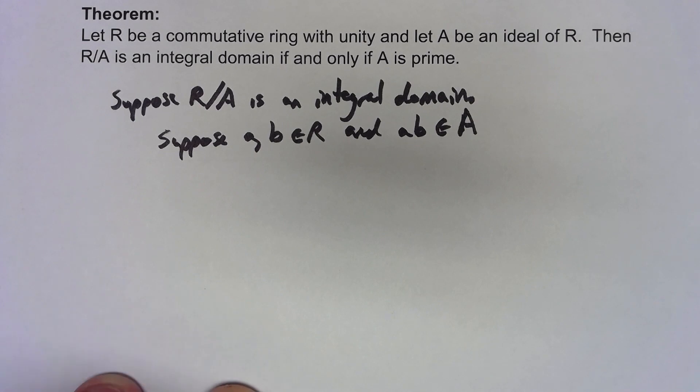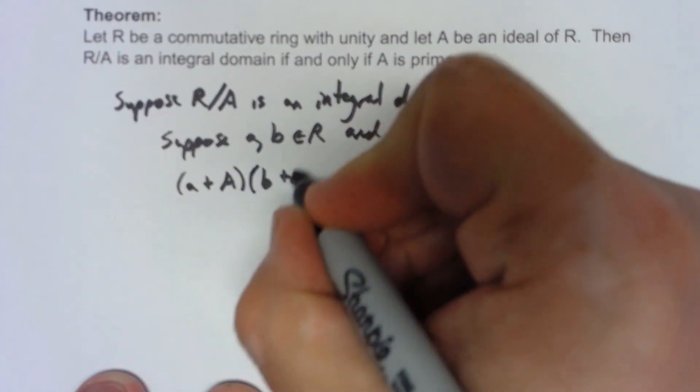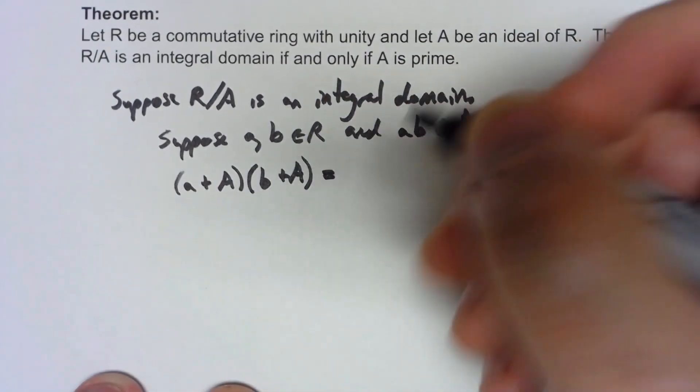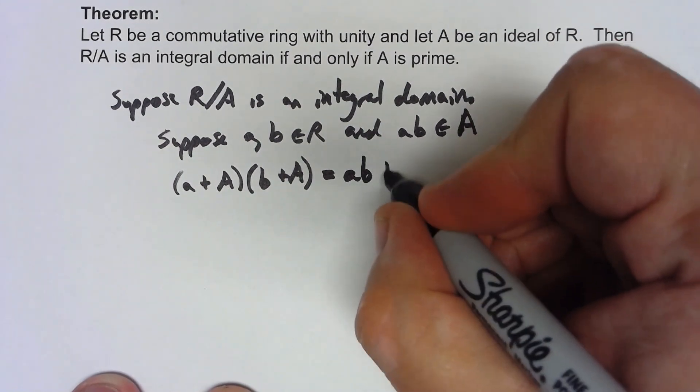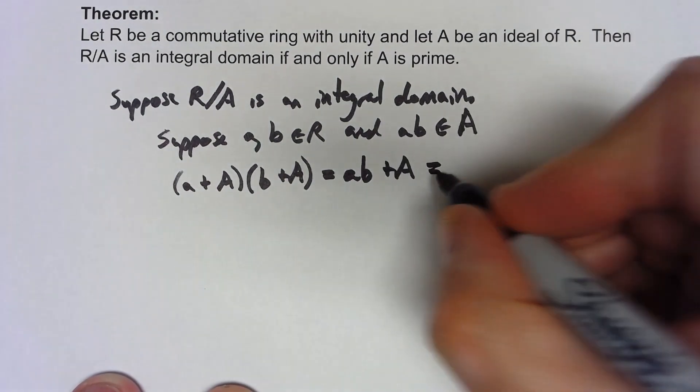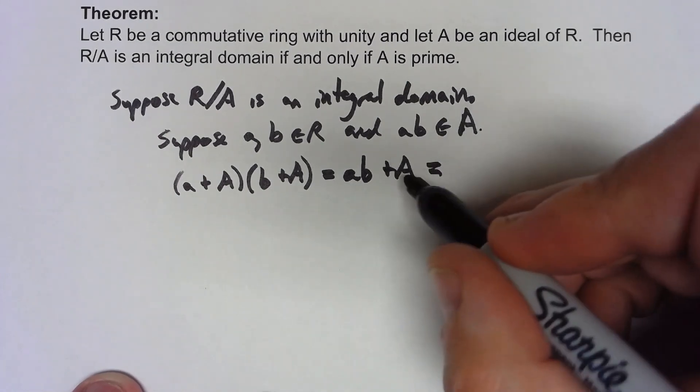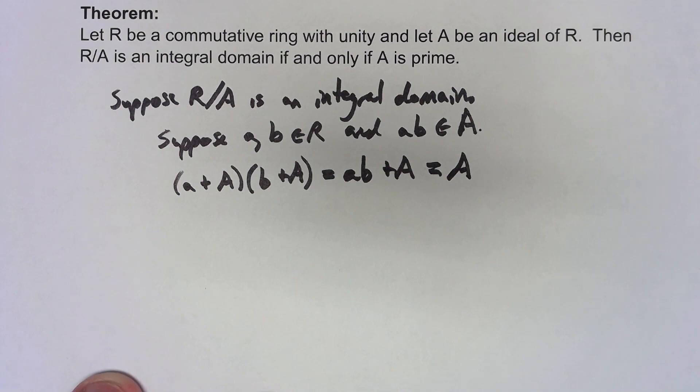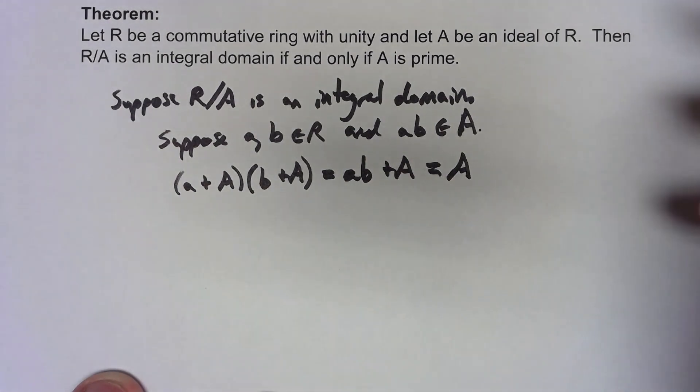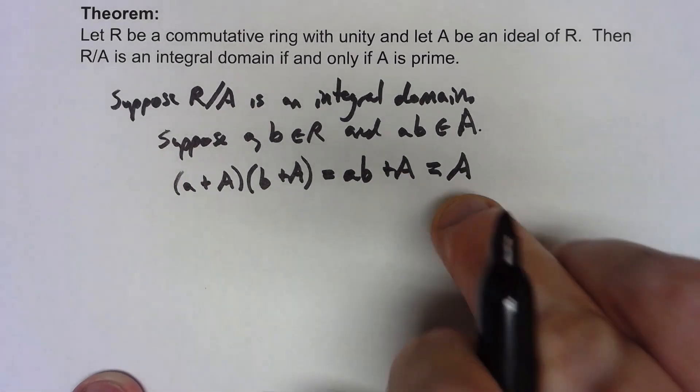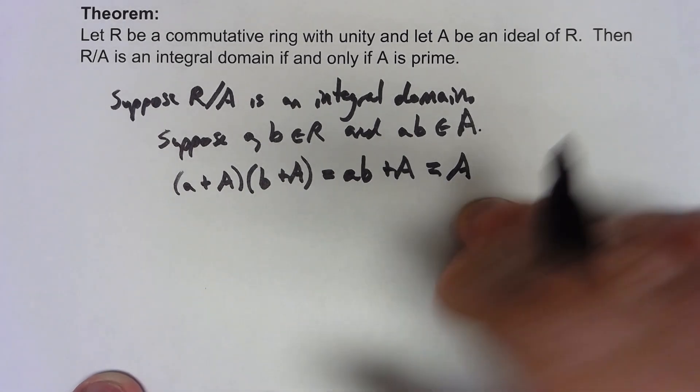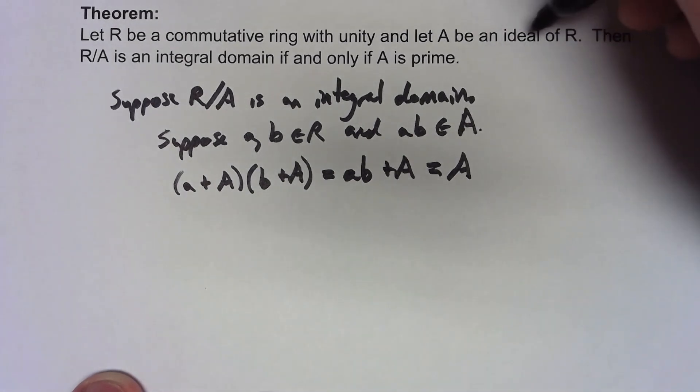Well, in the factor ring, suppose I have (a+A) times (b+A). By definition that's ab+A. Wait a minute, ab is an element of A so that thing is A.